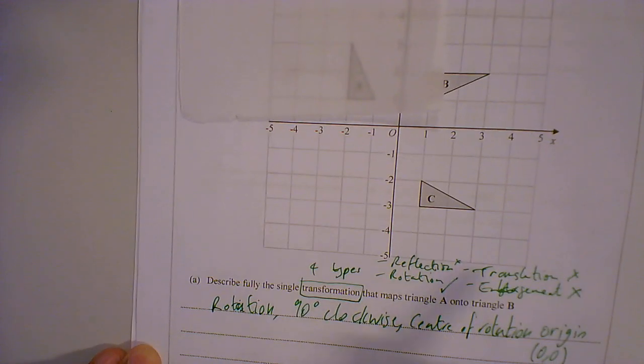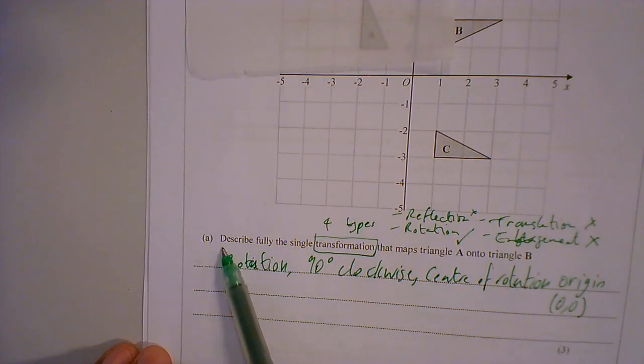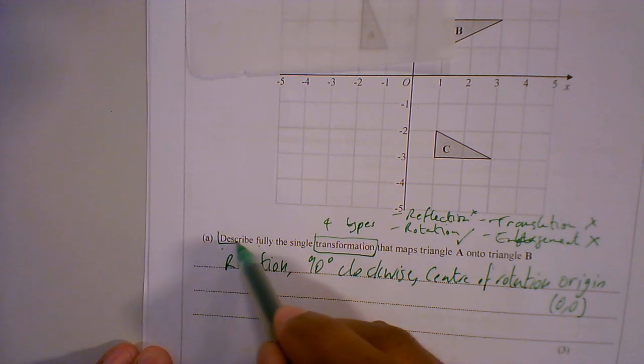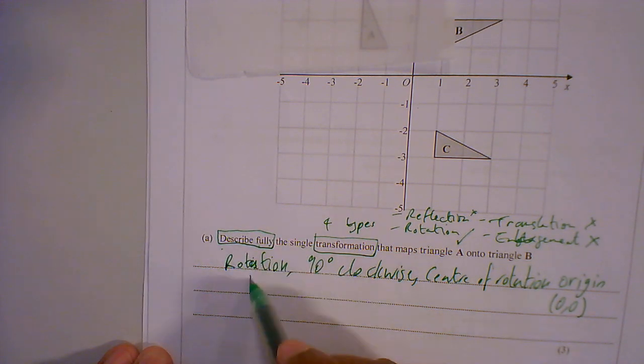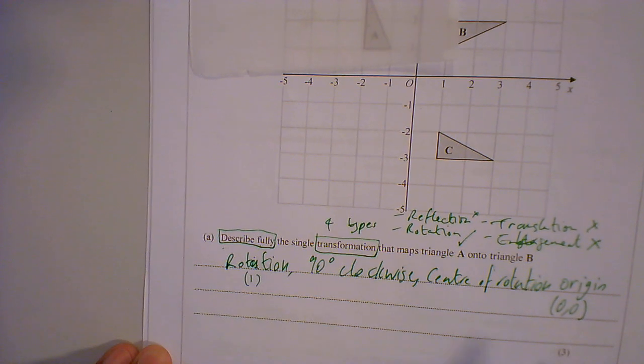Now, let me look at this. Describe fully. If you just wrote rotation, you wouldn't get the full marks, because it's not described fully. There are three parts here. Rotation, 90 degrees clockwise, and center of rotation. There are three parts to this.